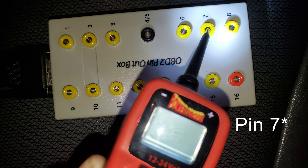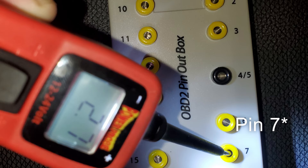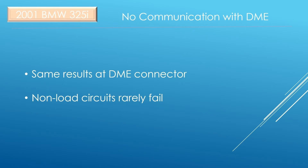Remember, pin 8 is the comm line strictly for the DME. I thought I might find it to be shorted, but it's not — it's an open circuit. If I connect the scanner, it changes to 2.7 volts just like pin 7. I measured the same at the DME as I did at the breakout box by back-probing this same line at the DME, so there's no broken wiring. Since I had no voltage at the DME with the scan tool unplugged and that voltage changed to 2.7 when I plugged the scanner in, I know there is not an open circuit between the DME connector and pin 8 of the DLC.